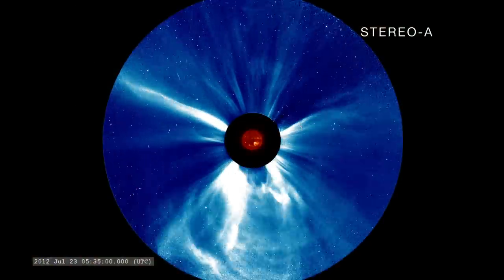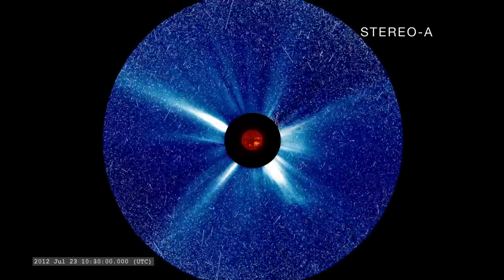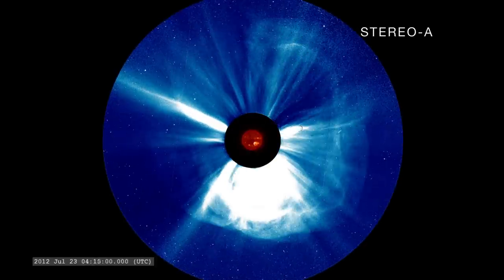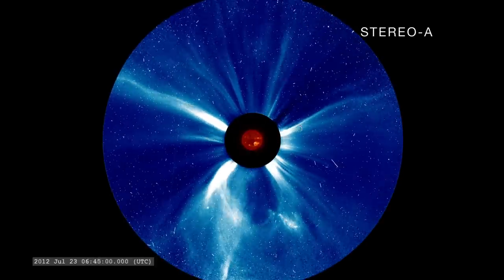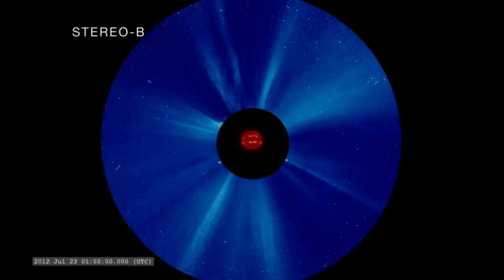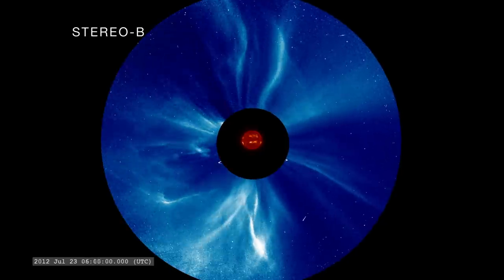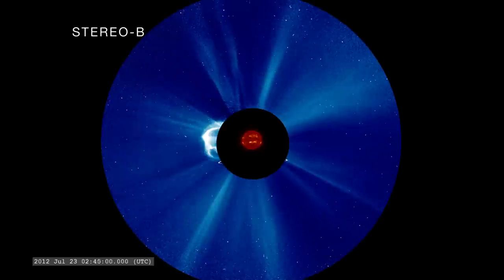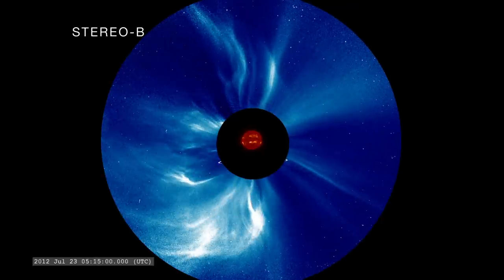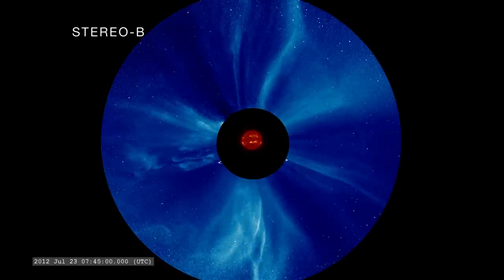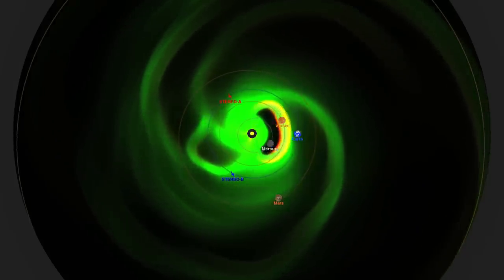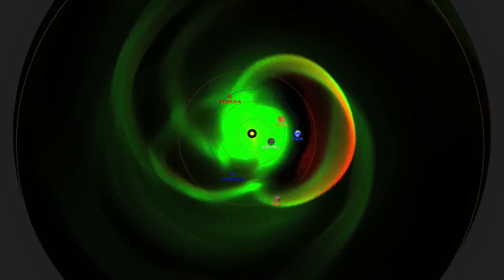The NASA Stereo A spacecraft recorded two small coronal mass ejections, followed by a Carrington scale blast. Had this event occurred a week earlier, it might have hit us with catastrophic effects.